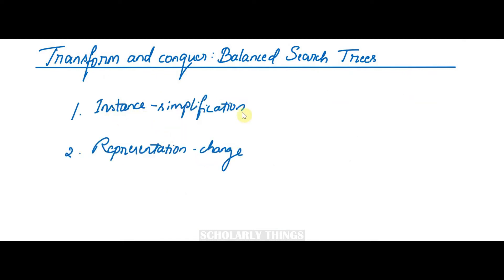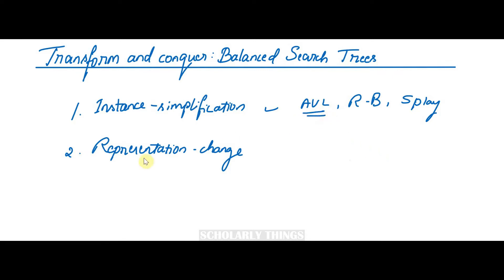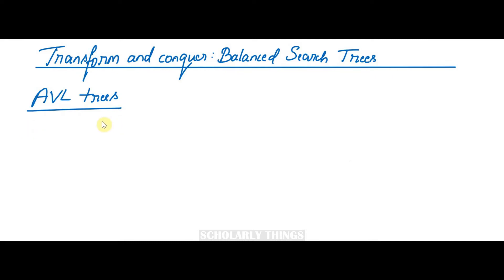The first approach is instance simplification variety, where an unbalanced binary search tree is transformed into a balanced one — these are called self-balancing trees. Implementations include the AVL tree, red-black tree, and splay trees. The second approach is representation change variety, which allows more than one element in a node. Depending on the number of elements admissible per node, varieties include 2-3 trees, 2-3-4 trees, B-trees, and so on.